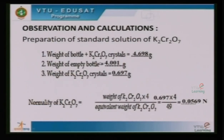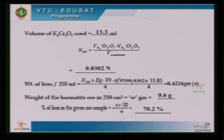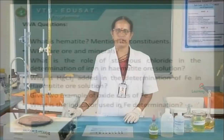Observation and calculations: The weight of the sample transferred to prepare the solution is 0.0697 grams. The normality of the solution is 0.0569. The weight of hematite ore in 250 cm³ is 0.6 grams. The percentage of iron calculated in the given ore sample solution is 70.2 percent.